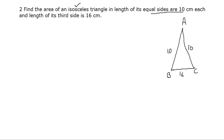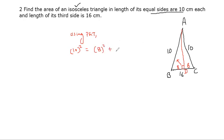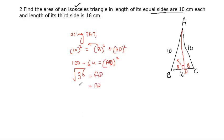We will draw a perpendicular from the apex to the base. This divides the base into 8 and 8. Let us call the foot of the perpendicular D. Using Pythagoras theorem: hypotenuse squared equals base squared plus perpendicular squared. 10 squared equals 8 squared plus AD squared. So 100 minus 64 equals AD squared. That gives 36 equals AD squared. Taking square root, AD = 6 centimetres.